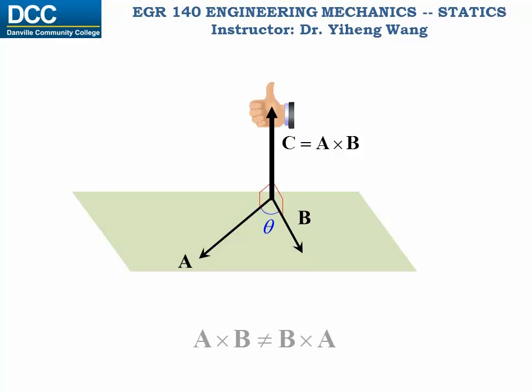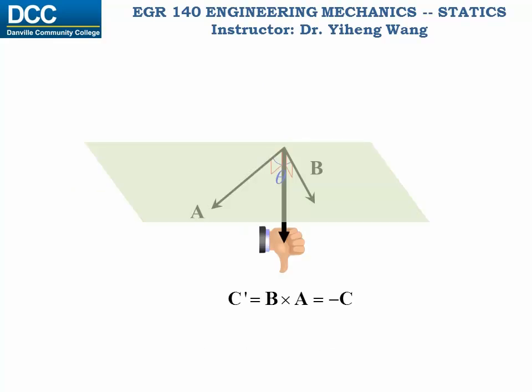A cross B is not the same as B cross A. In fact, B cross A represents another vector C prime that is in the opposite direction as vector C, and therefore equals negative vector C.